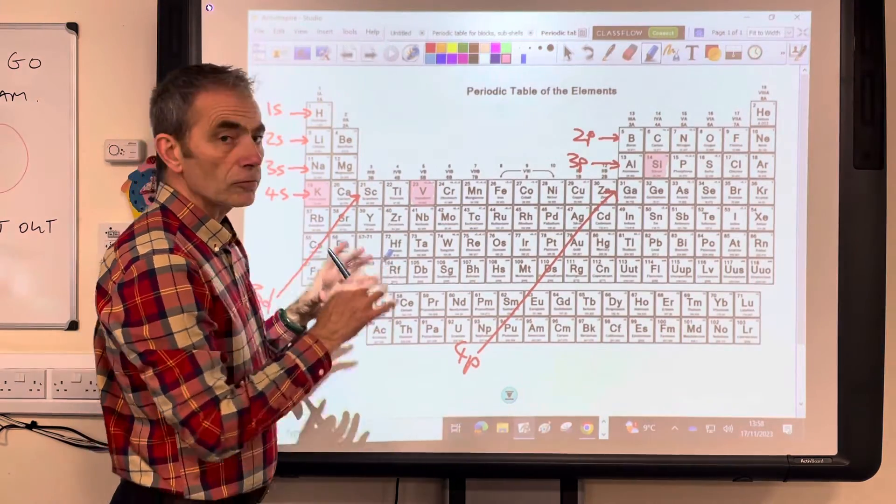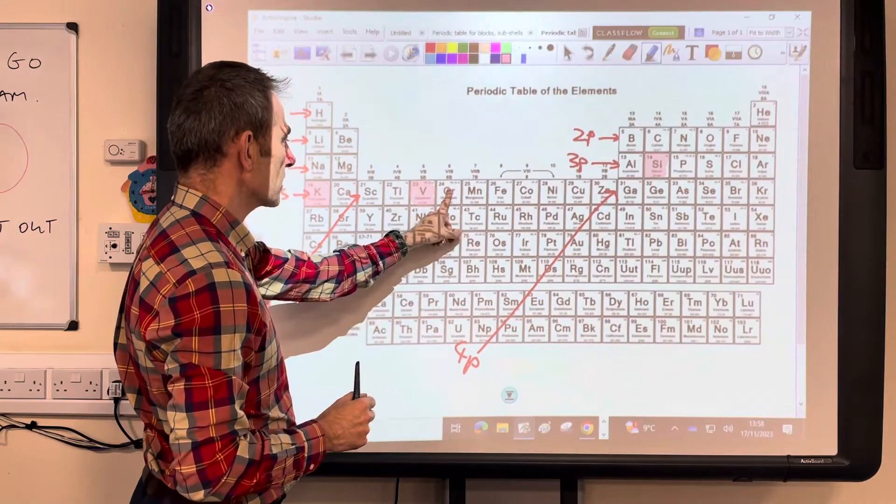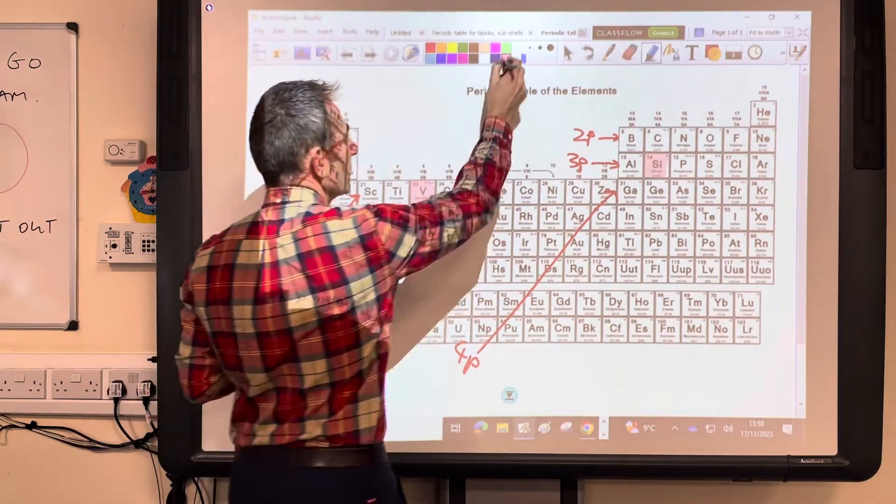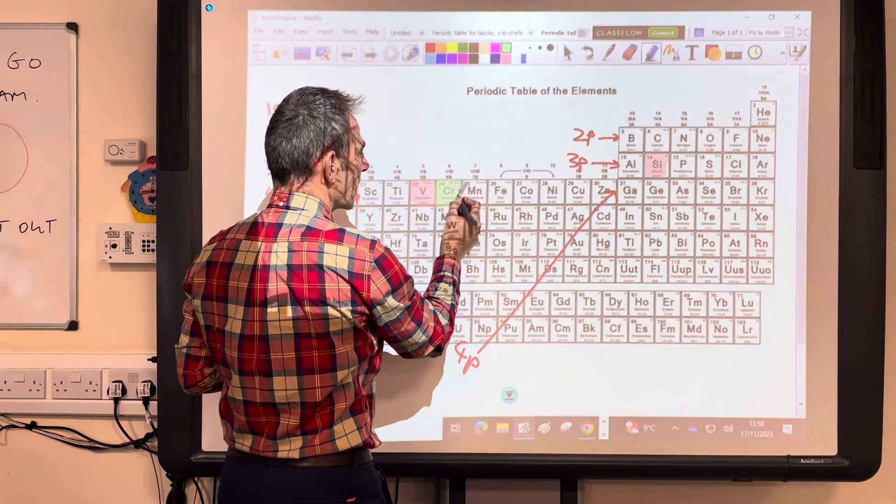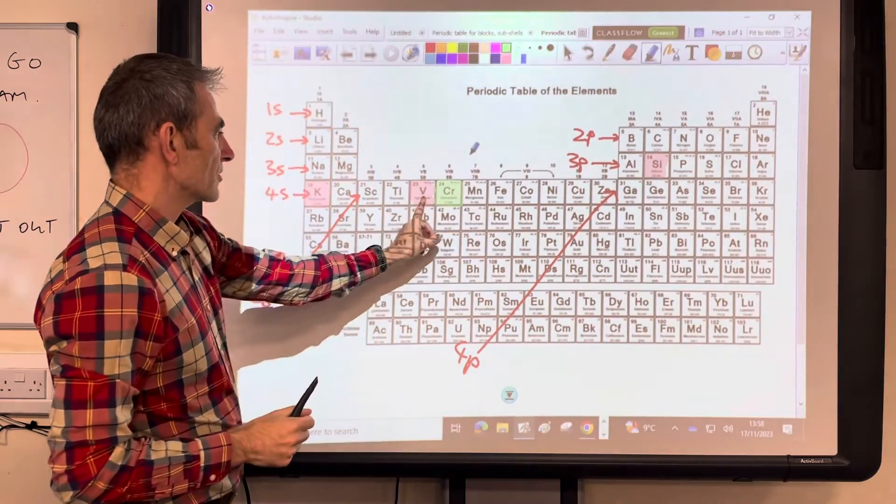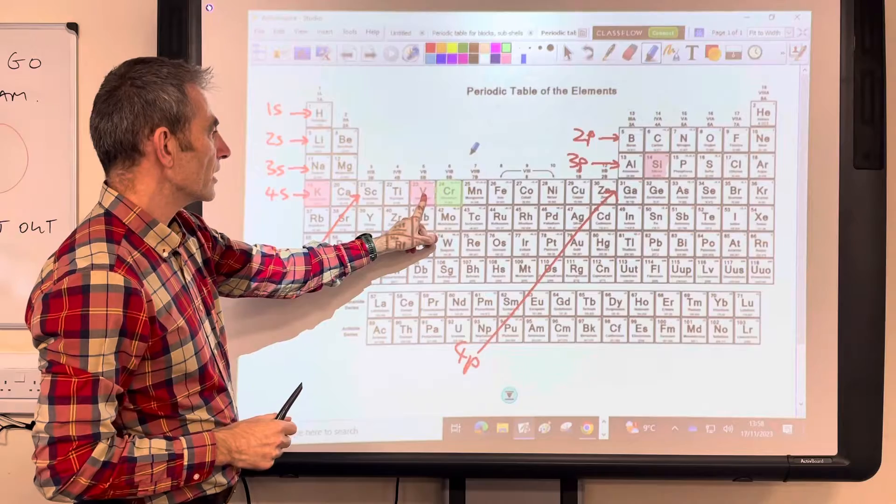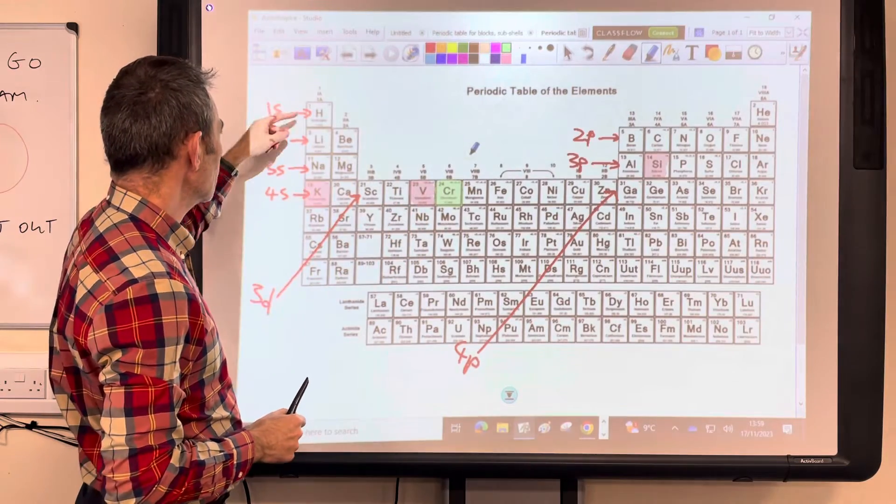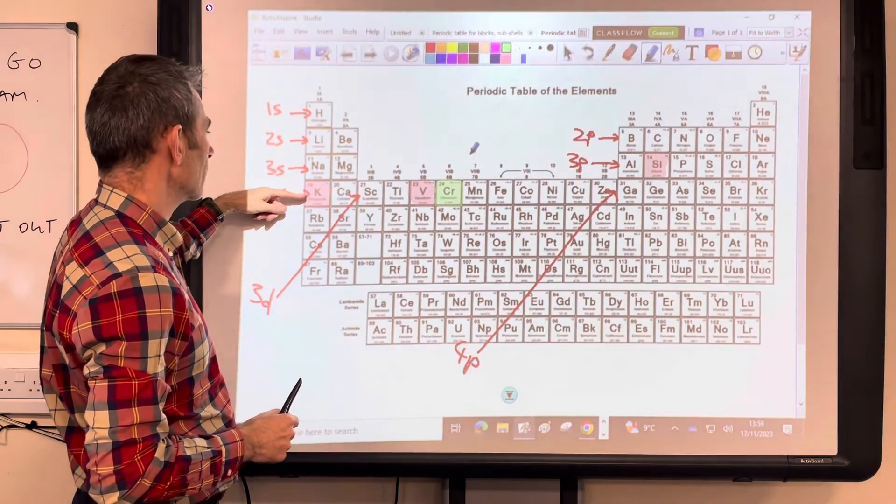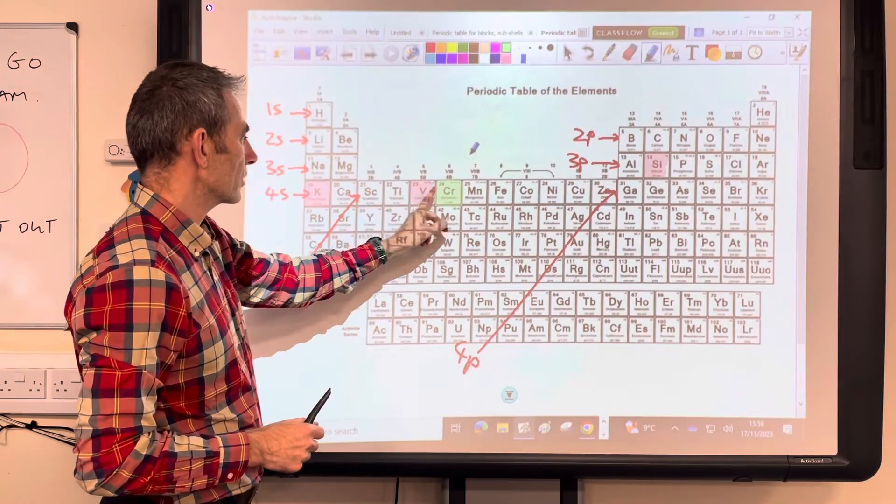So the two rogue ones now. Right next to vanadium is chromium. So what you would expect for chromium would just be one more than the vanadium. So what we said before, 1s2, 2s2, 2p6, 3s2, 3p6, 4s2, 3d4.